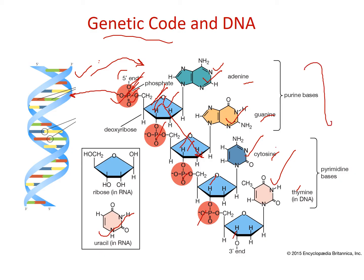Out of the three components, only the nitrogen bases vary from one segment to another. Every nucleoside will have different nitrogen bases — some will have adenine, some thymine, and so on. The genetic information depends on the nitrogen base sequence, because the sequence of nitrogen bases changes across genes.